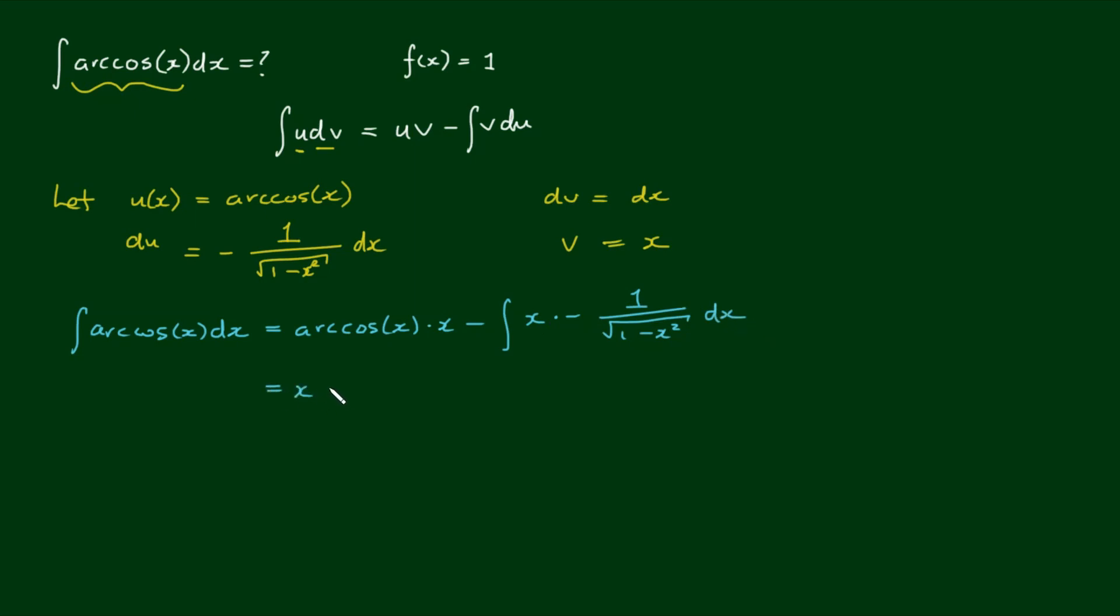So if we neaten the right-hand side up a little bit, we get x times the arc cosine of x, and the negative comes out the front to become a positive when it's multiplied by the other negative of the integral of x over the square root of 1 minus x squared dx.